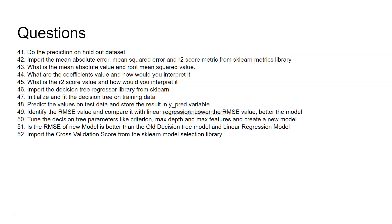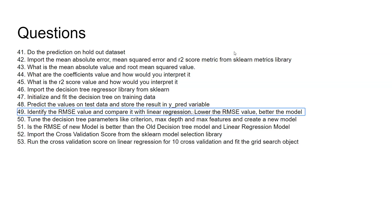Now we move to more advanced content: cross-validation. In the previous questions (21 to 40) you created a train-test split with a fixed 30 percent holdout. Cross-validation works differently — for example, with a value of 10, one-tenth of the data is held out for testing and the remaining 90 percent is used for training in each iteration.